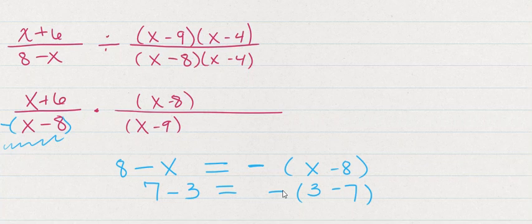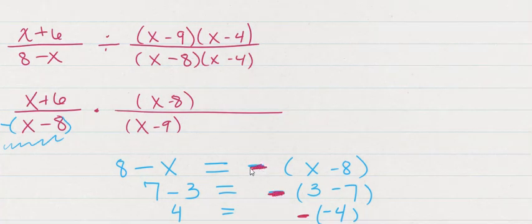So 7 minus 3 is the opposite of 3 minus 7, because 4 is the opposite of negative 4. In the same way, 8 minus x and x minus 8 are opposite.